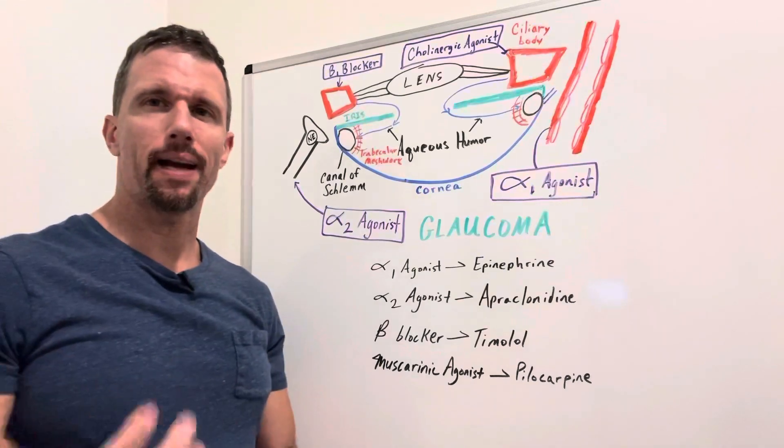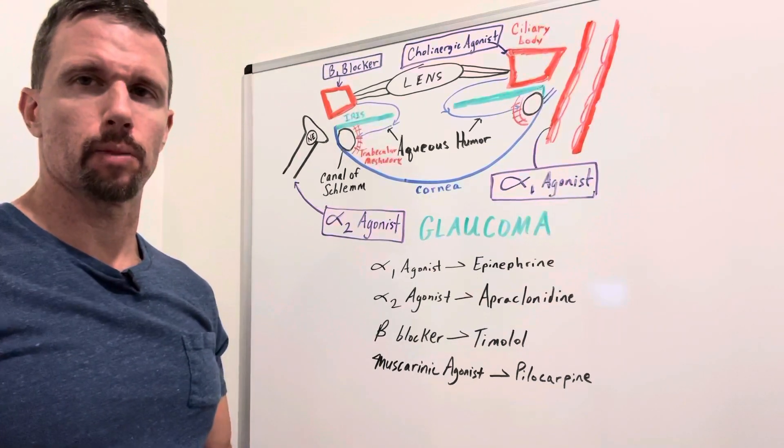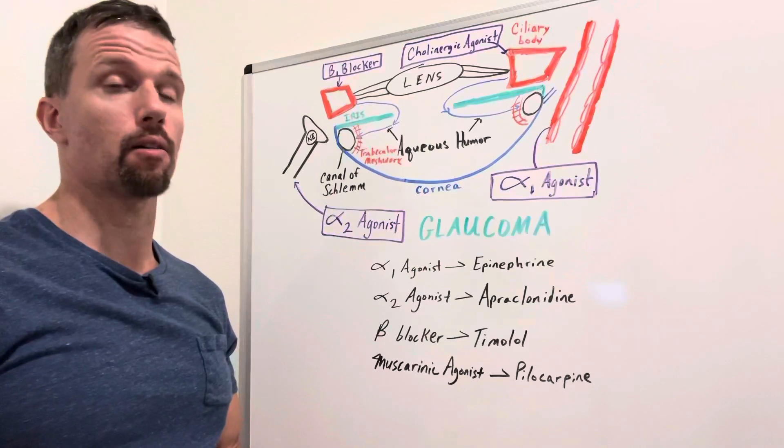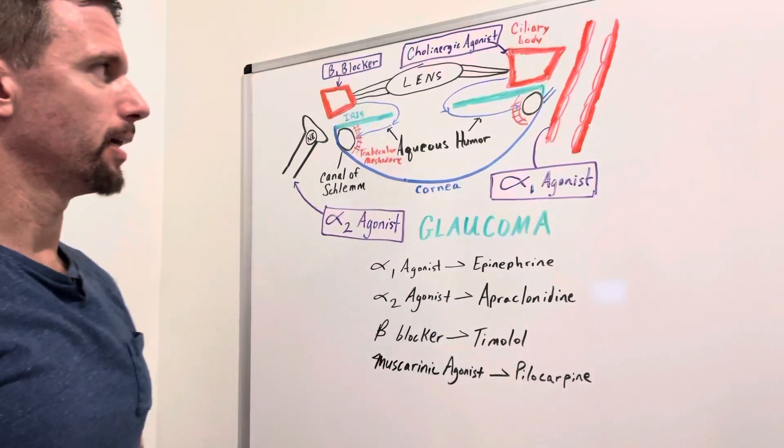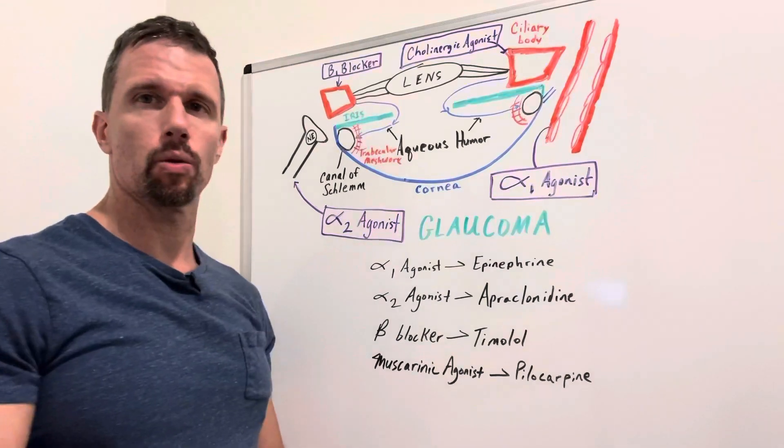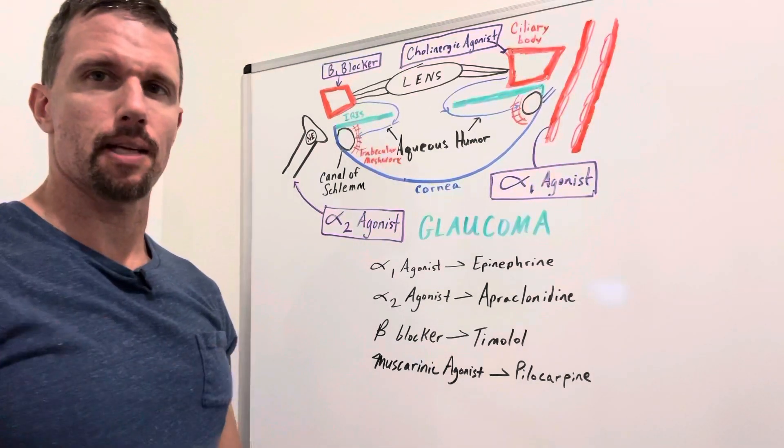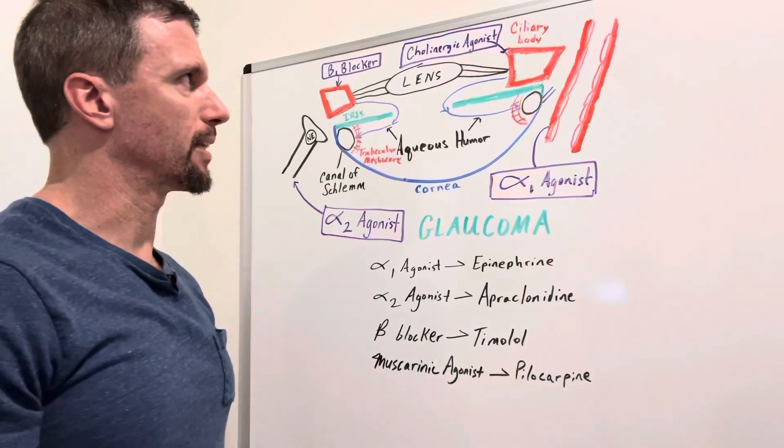So with glaucoma you have open angle glaucoma and closed angle glaucoma. Closed angle glaucoma is a medical emergency. It really builds up pressure fast, whereas open angle can be a slower onset and more of a chronic thing.